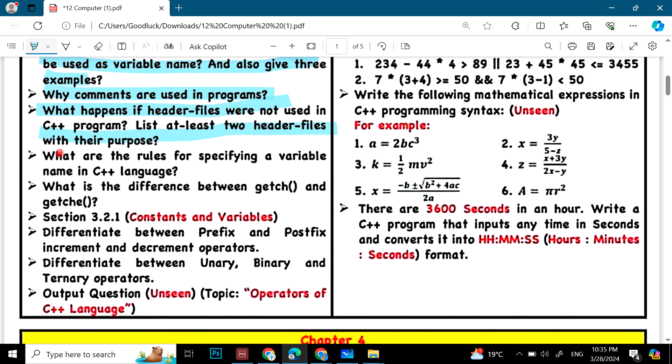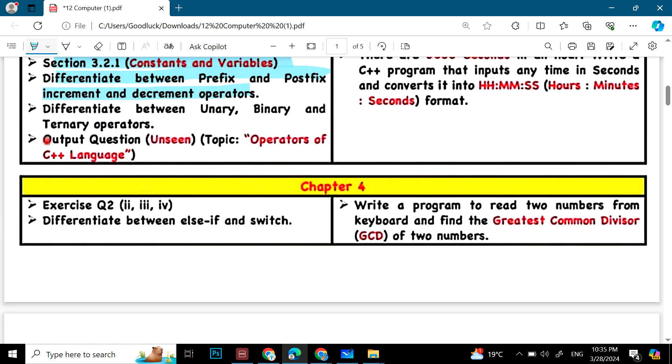And then we have what are the rules for specifying a variable name in C++ language? What is different between GETCH and GETCHE? Section constant and variable, differentiate between prefix and postfix increment and decrement operators, differentiate between unary, binary and ternary operators. Output question, unseen operators of C++ language A include a topic.